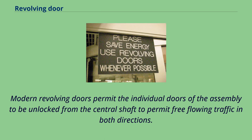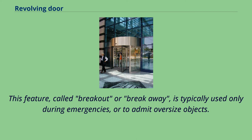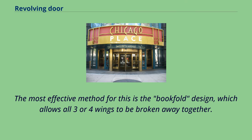Modern revolving doors permit the individual doors of the assembly to be unlocked from the central shaft to permit free-flowing traffic in both directions. This feature, called breakout or breakaway, is typically used only during emergencies or to admit oversize objects. The most effective method for this is the book fold design, which allows all three or four wings to be broken away together.